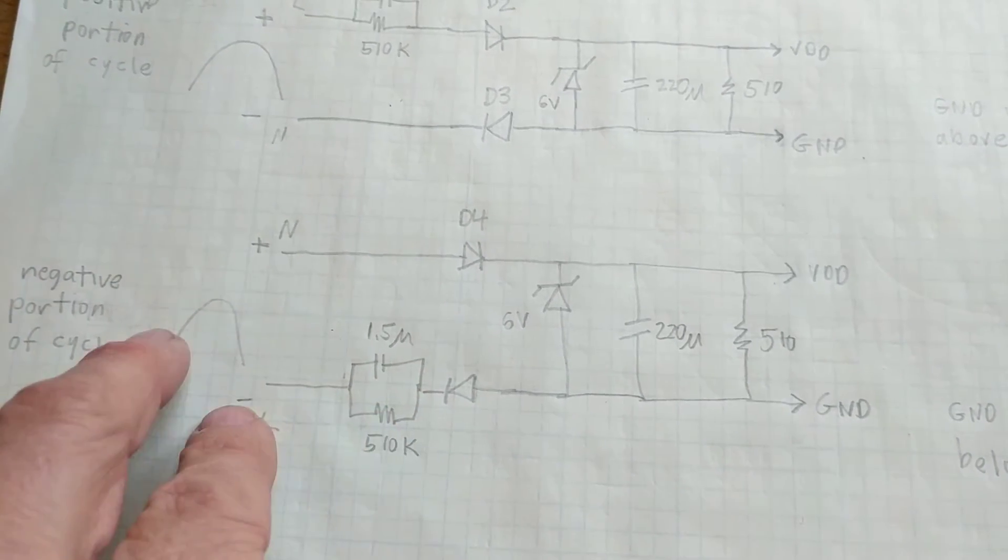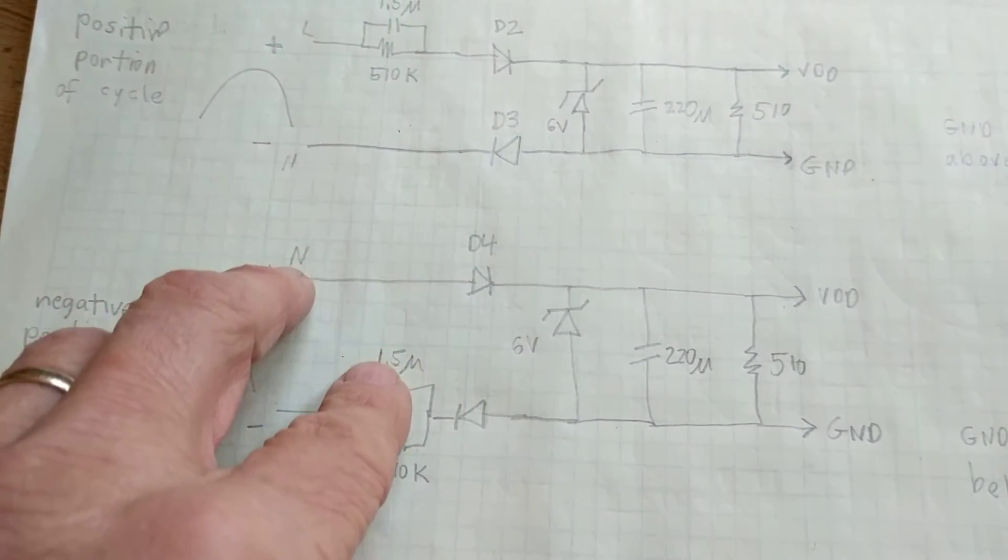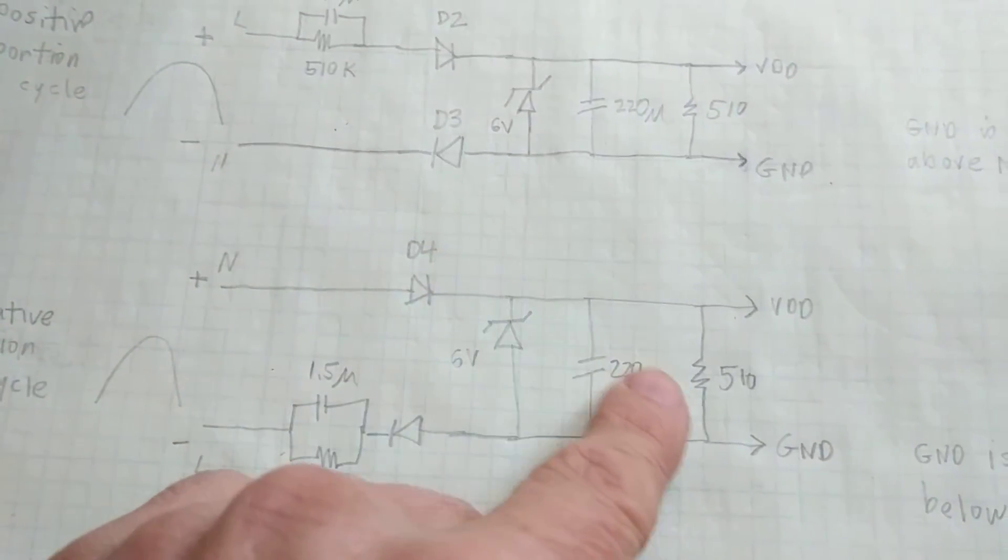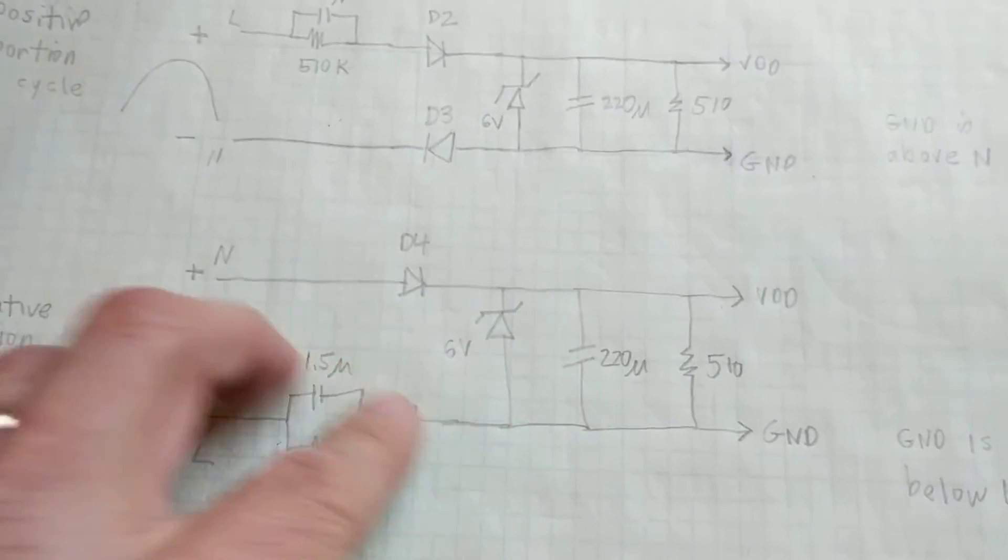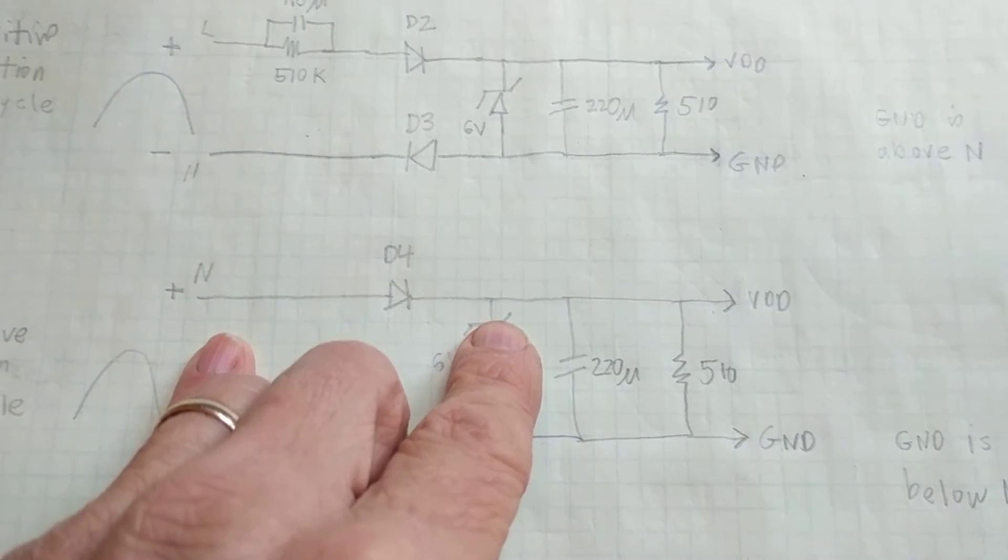the 1.5 µF capacitor, which has to tolerate a very high voltage, the full voltage, limits the amount of current that is available to go through the load. And the Zener still clamps it at 6 volts.